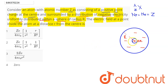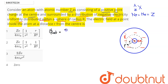We need to find the electric field inside the atom at distance r from the center. Using Gauss's law, to find the electric field at point B, we assume an imaginary Gaussian surface of radius small r. Applying Gauss's law: the net electric flux equals the surface integral of E, which equals q enclosed divided by epsilon naught.